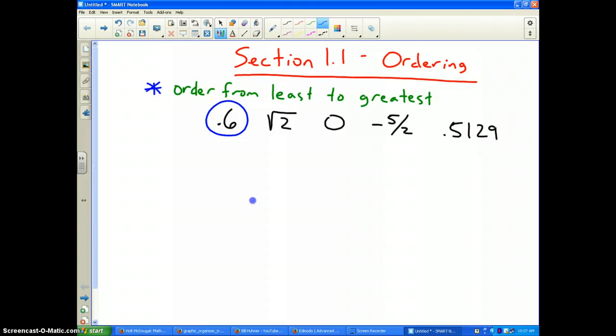Square root of two: to change that to a decimal without a calculator, think about your perfect squares. For example, square root of one, square root of four, square root of nine, square root of sixteen. We know these work out perfectly: square root of one is one, square root of four is two, square root of nine is three, and square root of sixteen is four.